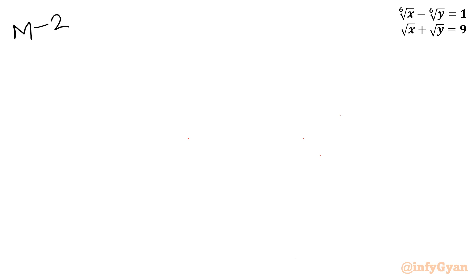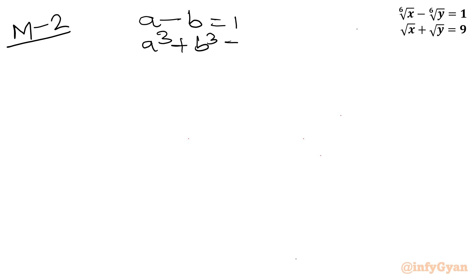Method 2, or Approach 2. Here I will write the equations: a minus b equals 1, and a³ plus b³ equals 9. Now I will consider one additional equation: a plus b equals k. I will be considering squaring both this equation and the equation a minus b equals 1.